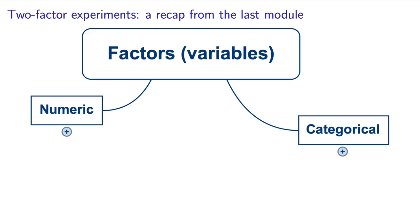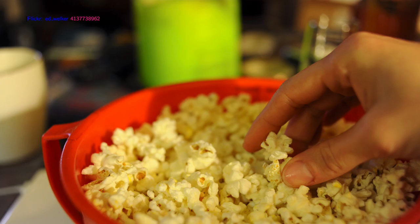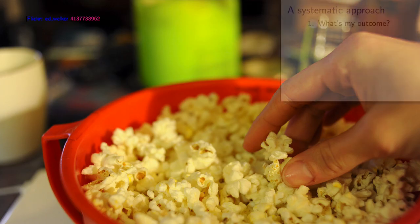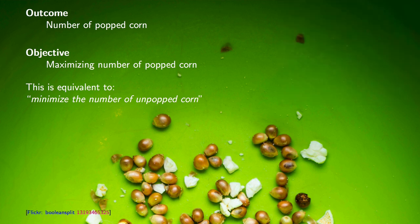So we are considering a basic example, an experiment with two factors. In the prior module, we had said factors can either be numeric or categorical. In this example, we will consider one factor of each type. So we are going to make popcorn. And in this experiment, the outcome is the number of popped kernels. It might be our objective to maximize that number of popped corns. Most of you are able to try this one at home, which is why this is such a great example to start with.